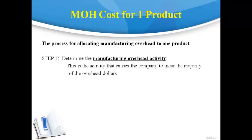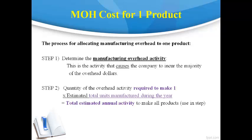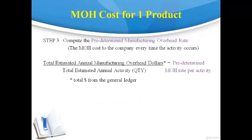After the manufacturing overhead activity is selected, the next step is to quantify the amount of activity required to make all of the products. The quantity required to make one is multiplied by the total number of products to be made during the year, giving the total estimated quantity required to make all products. The manufacturing overhead activity is the activity that causes the company to incur manufacturing overhead — it is not always the highest cost. The next step is to compute the manufacturing overhead rate, which is the total estimated manufacturing overhead cost divided by the total estimated quantity of activity, giving the average cost every time that activity occurs.